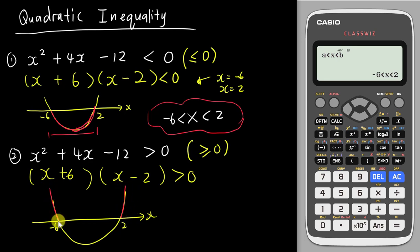From negative 6, any value less than negative 6 we write as x less than negative 6. For this part of the graph, all the values bigger than 2, so x must be bigger than 2.